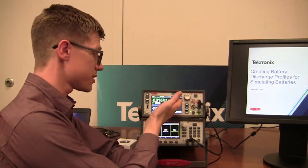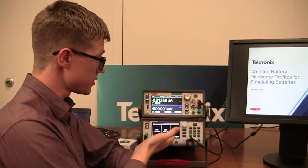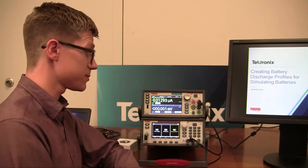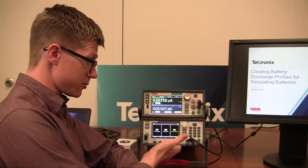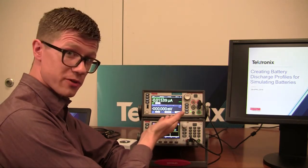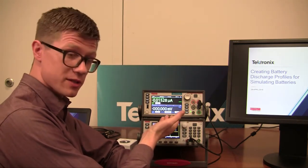So essentially what we're going to do is connect the 2460, in this case, to the 2281S Precision DC Supply and Battery Simulator. We're going to simulate a battery with this one and then discharge the battery with this and create a model of it.